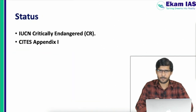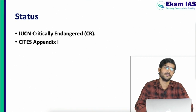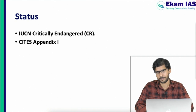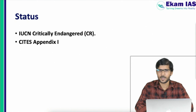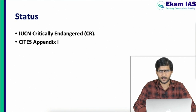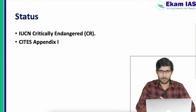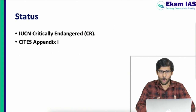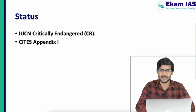From a UPSC prelims perspective, the conservation status is most important. On the IUCN Red List, all three species of Orangutan are critically endangered. Under CITES — the Convention on International Trade in Endangered Species of Wild Fauna and Flora — which is an international agreement aimed at ensuring that international trade in specimens does not threaten their survival, all three species of Orangutan are listed under Appendix 1.